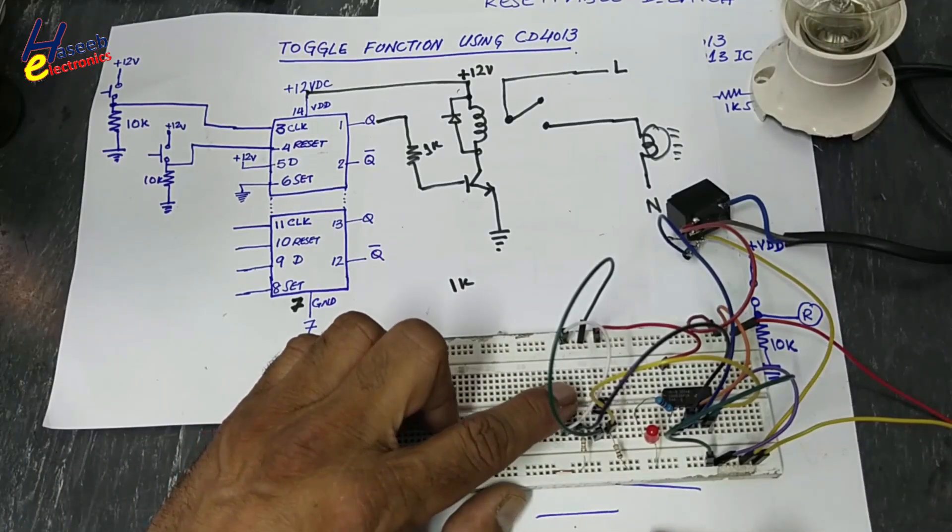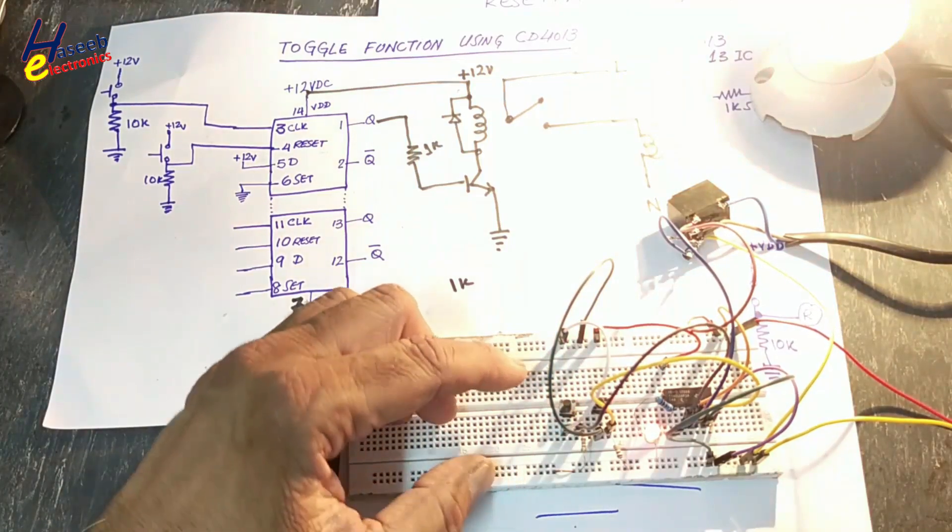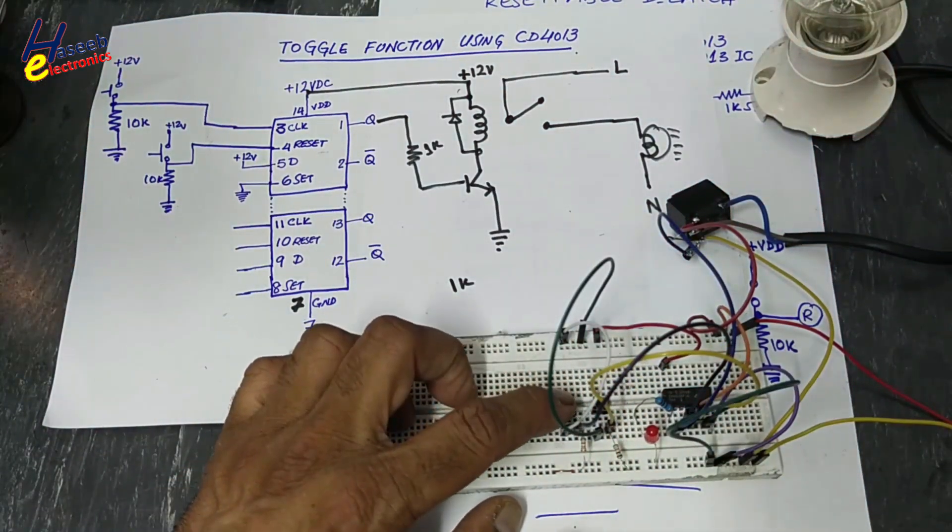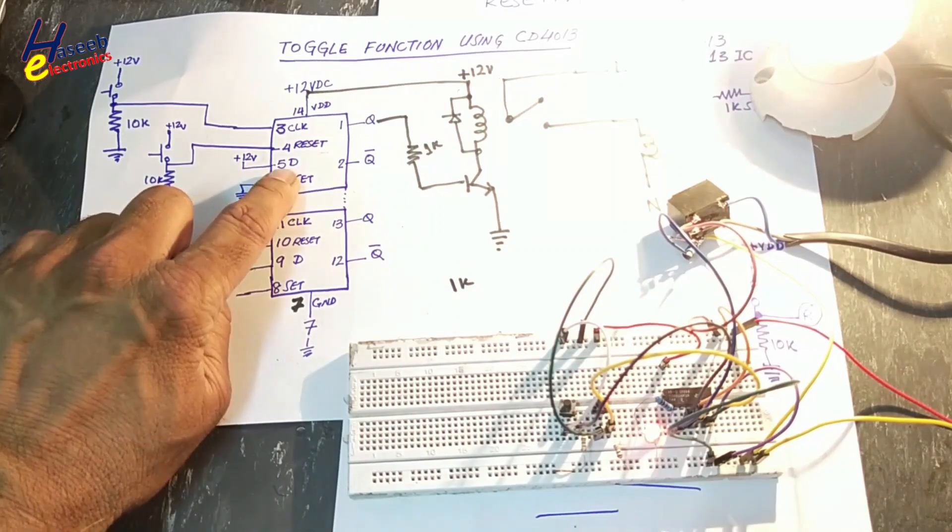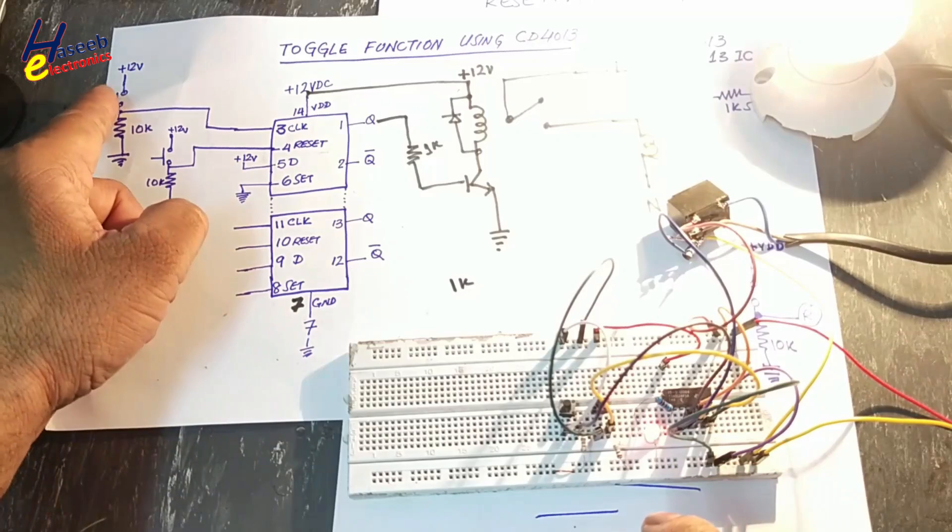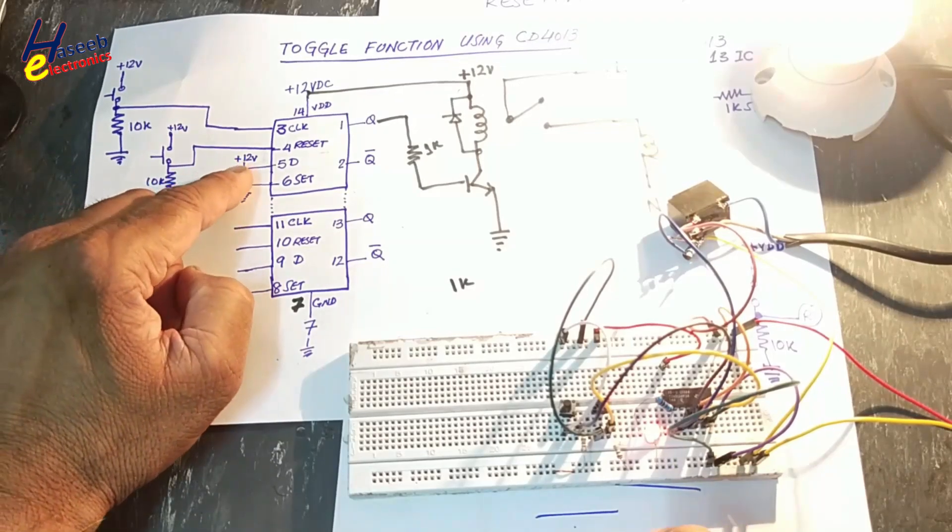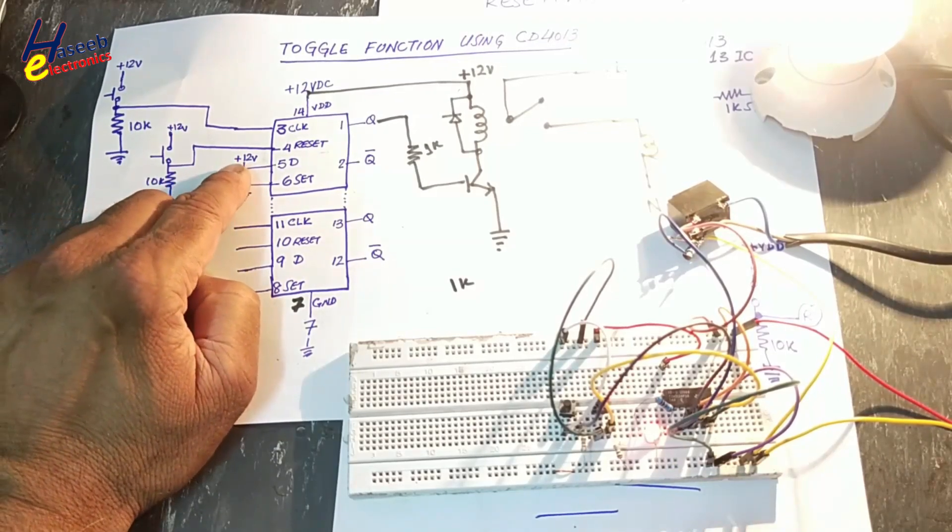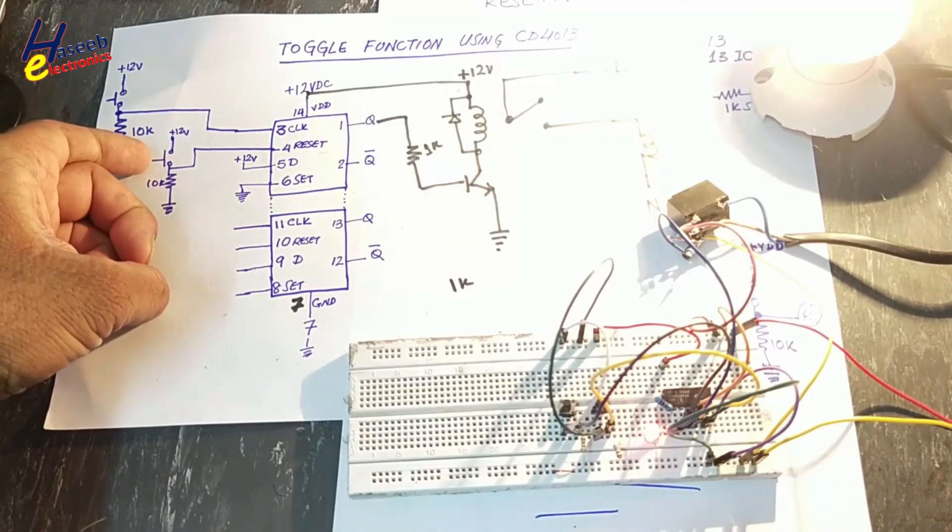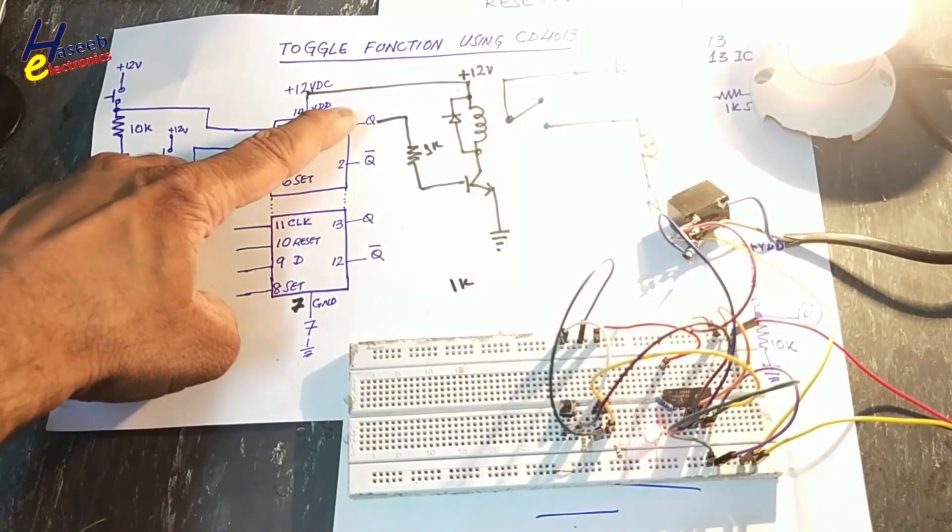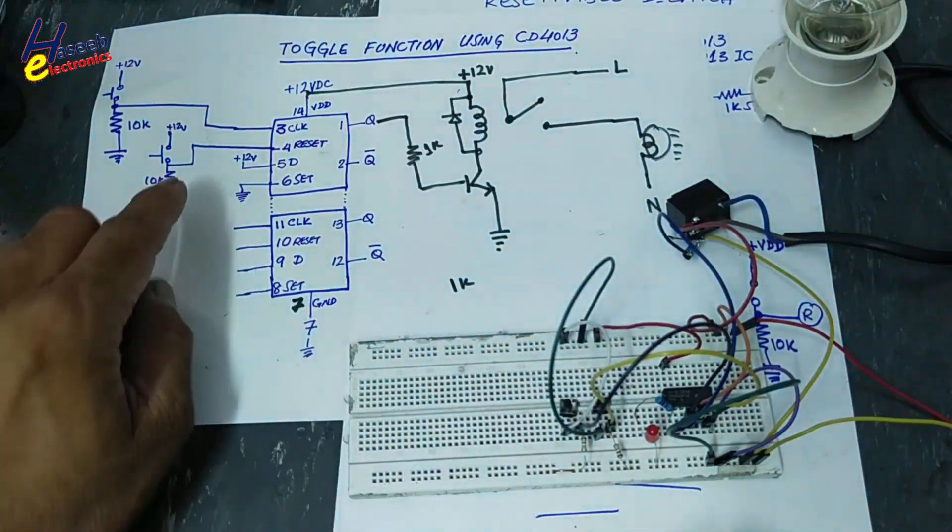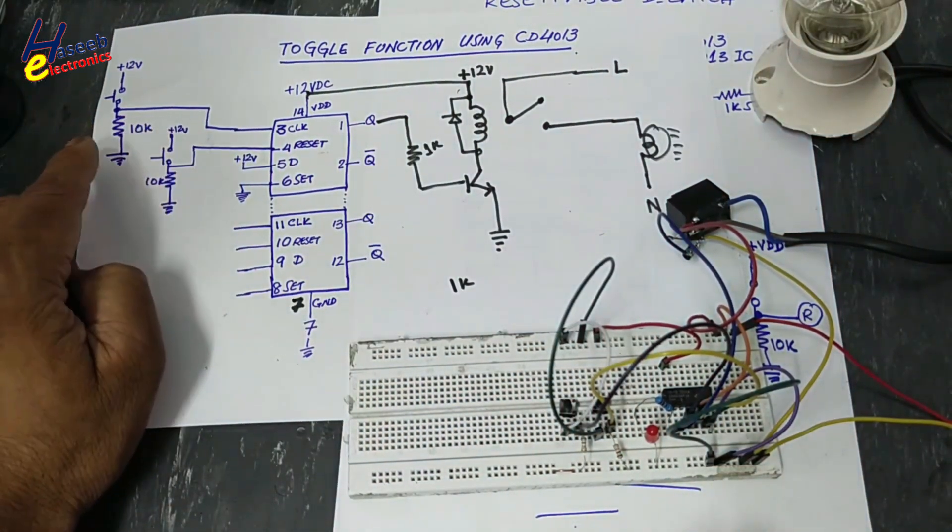In last session we used this switch to turn on the load and second switch to reset it. We used this switch to make clock signal. Pin number 5, that is D input, is connected to VDD pin. We will press this button. This high voltage, 12V VDD, will reach to output. Load will turn on. When we will press reset button, it will reset the IC and Q will low, Q bar will high. Now we will remove reset. We will use only clock signal.